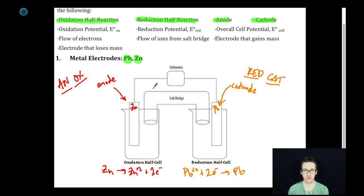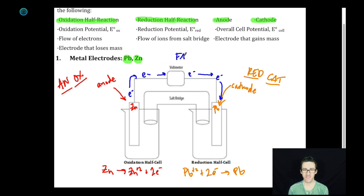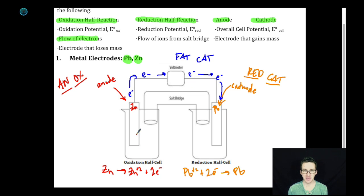The next thing I'm going to do is describe the flow of electrons. Electrons are going to flow from the anode to the cathode. Remember: fat cat — from anode to cathode. Flow of electrons. Now if zinc is being oxidized, that means that we are plopping in a bunch of these zinc ions as they lose electrons — they're going to dissolve into solution.